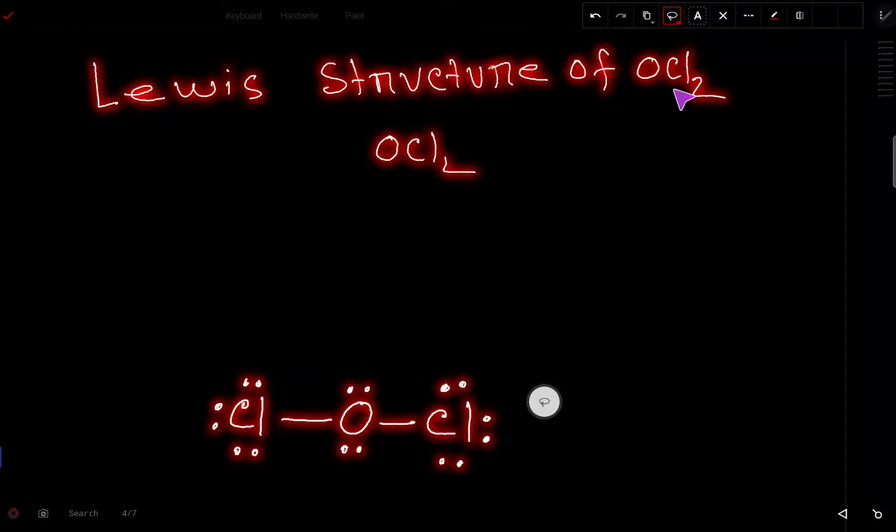Lewis structure of OCl2 dichlorine monoxide. At first we have to find out the valence electrons for this molecule.